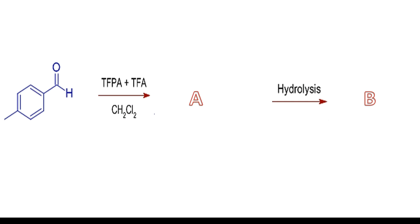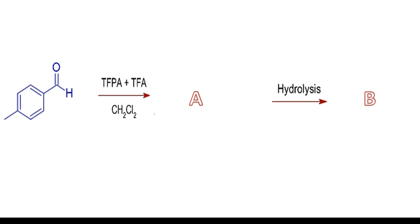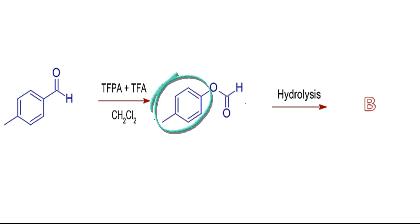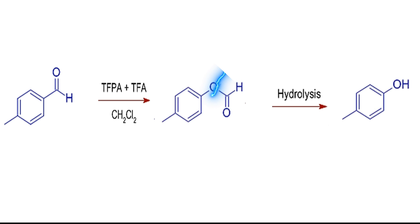The Baeyer-Villiger oxidation of para-methylbenzaldehyde with trifluoroperoxyacetic acid in dichloromethane results in formation of a formate — para-methylphenyl formate — due to preferential migration of the aryl group substituted by an electron-donating methyl group. But it undergoes hydrolysis under the reaction conditions to yield a phenol, para-methylphenol. This reaction is similar to that of the Dakin reaction.